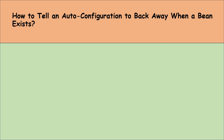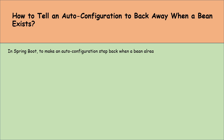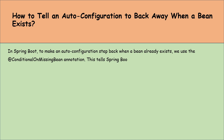How to tell an auto configuration to back away when a bean exists? In Spring Boot, to make an auto configuration step back when a bean already exists, we use the @ConditionalOnMissingBean annotation. This tells Spring Boot to only create a bean if it doesn't already exist in the context.